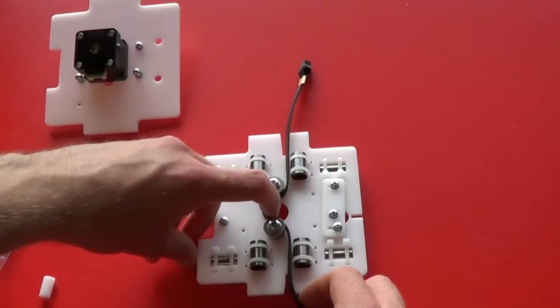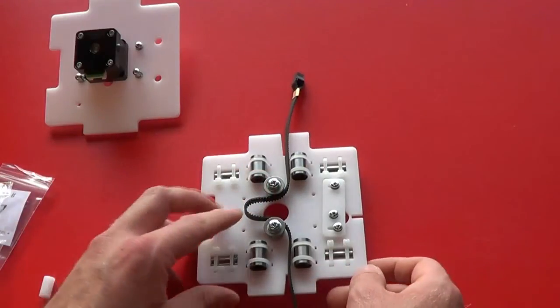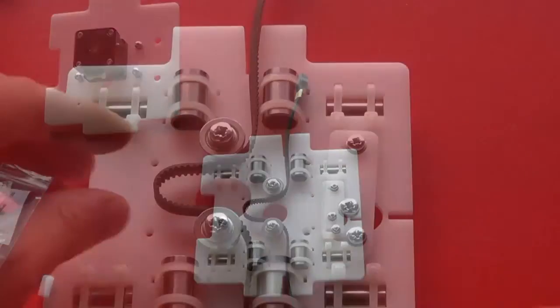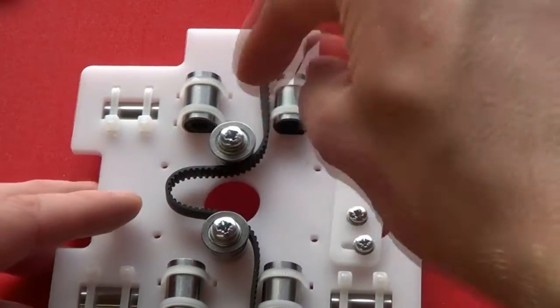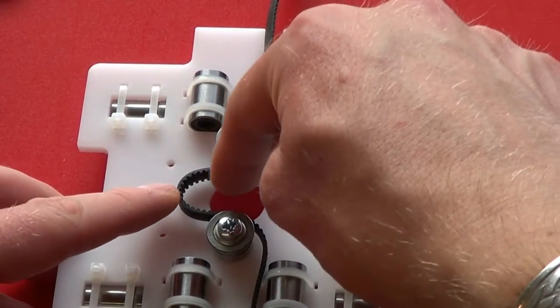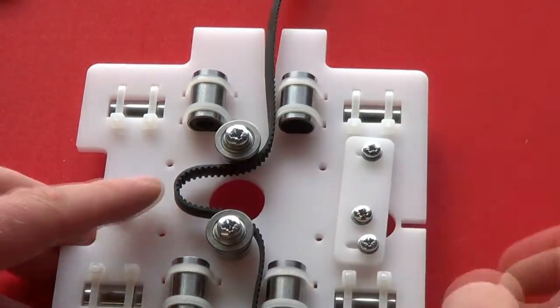In the middle, pull the belt around the two guide rollers. When the top carriage plate is placed onto this, the stepper motor pulley will be located in the center here.